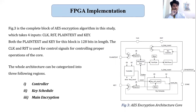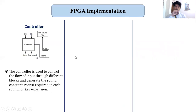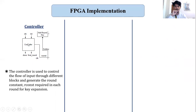Here we can see the complete block of the AES encryption algorithm which takes four inputs: Clock, Reset, PlainText and Key. Both the PlainText and Key are 128 bits in length. The Clock and Reset are used as control signals. This whole architecture can be categorized into three regions: controller, key schedule, and main encryption. The controller is used to control the flow of input through different blocks and generate the round constant required for key expansion. The done and final round signals are also generated from this controller.